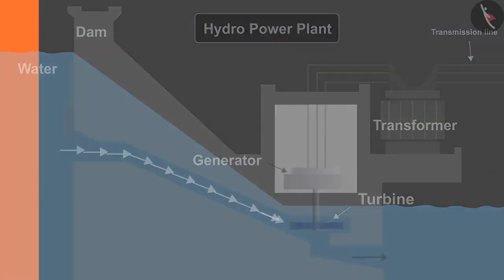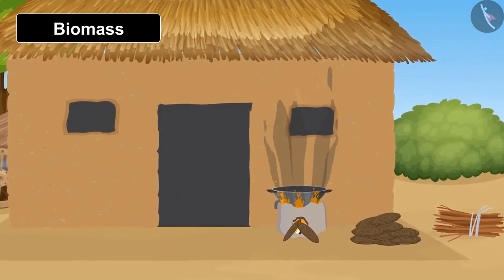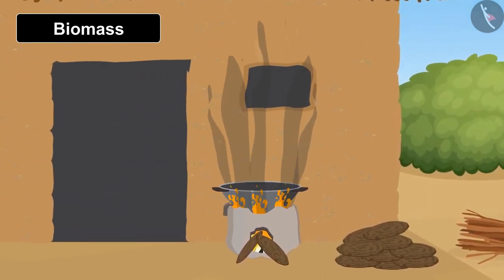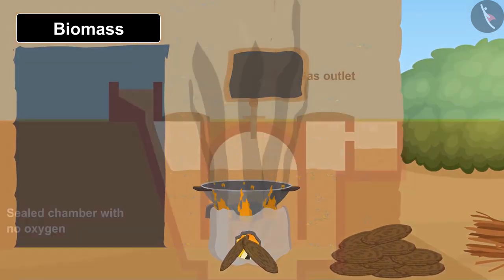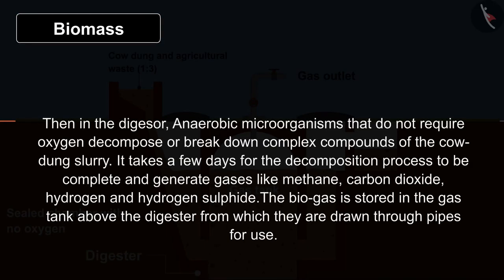Another form of energy conversion is through biomass plants. Dried cow dung and remains of agriculture are used as fuel in villages, but this causes a lot of air pollution and provides less energy. To convert more energy, large biomass plants are constructed. The first step is to dig a large hole in the ground known as a digester. Cow dung and agricultural waste are filled with water in a ratio of 1:3. In the digester, anaerobic microorganisms — which do not require oxygen — decompose the complex compounds of the cow dung slurry. This decomposition process takes a few days and generates gases like methane, carbon dioxide, hydrogen, and hydrogen sulfide. The biogas is stored in a gas tank above the digester and drawn through pipes for use.